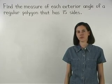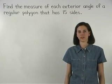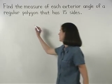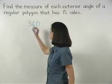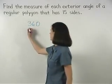We take the sum of the measures of the exterior angles, which remember from the previous section is always 360 degrees, divided by the number of sides in the polygon, which is n.